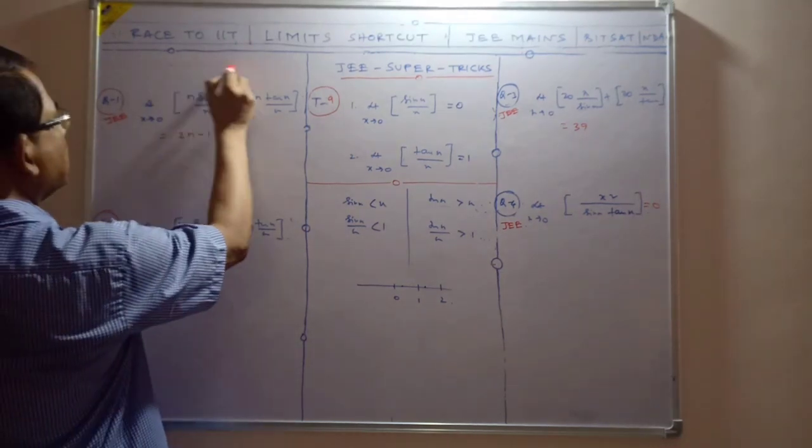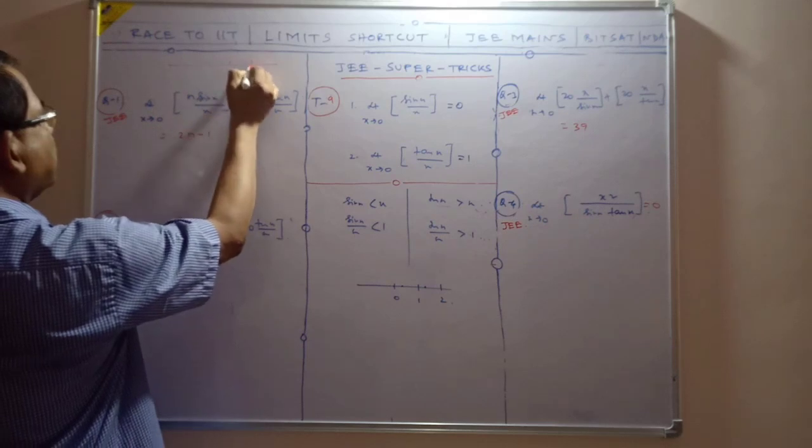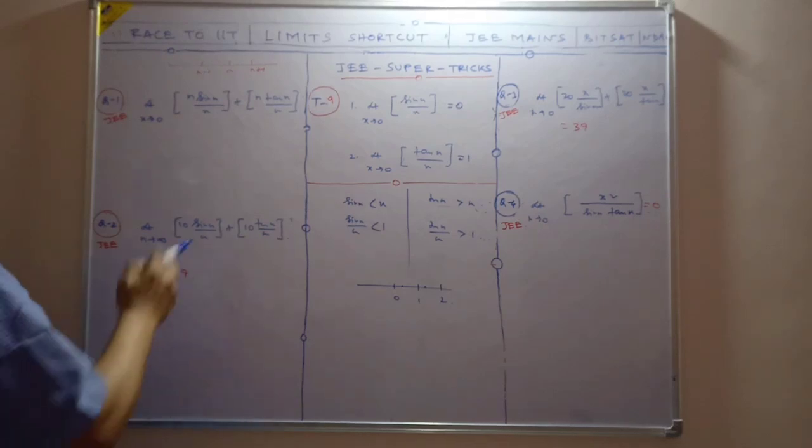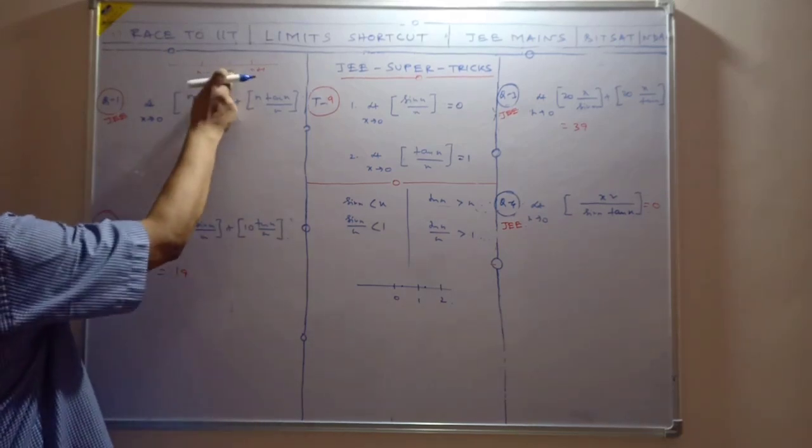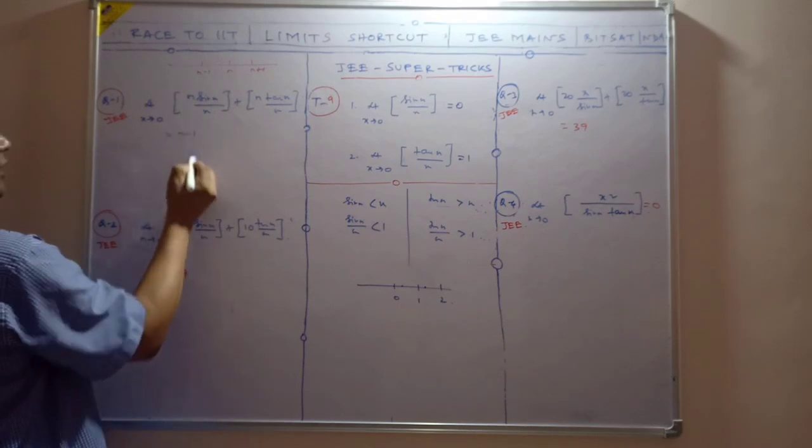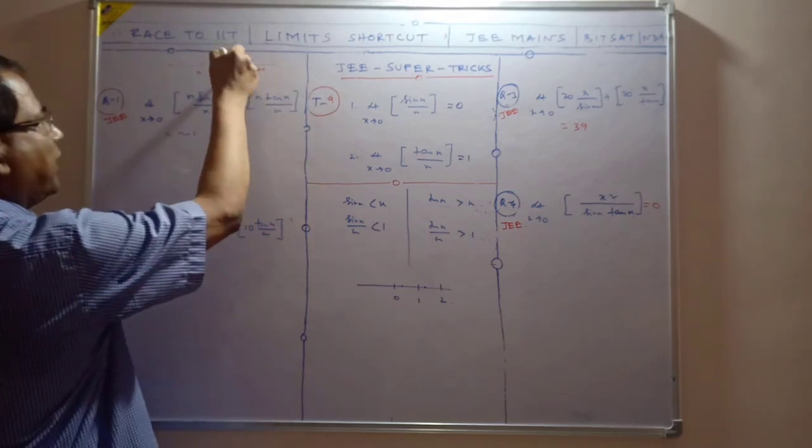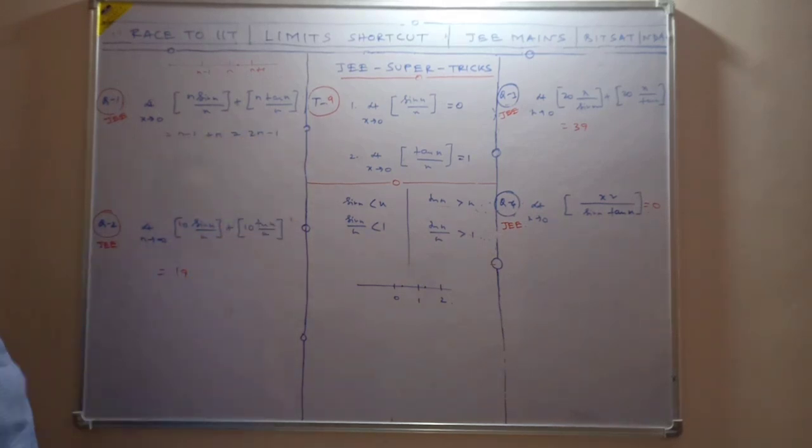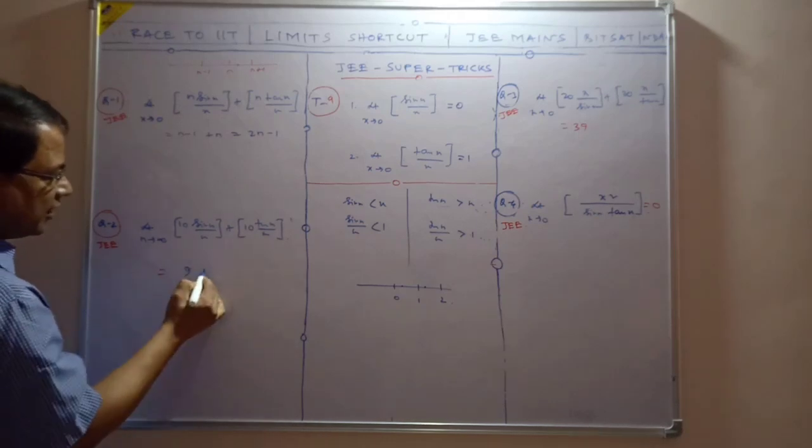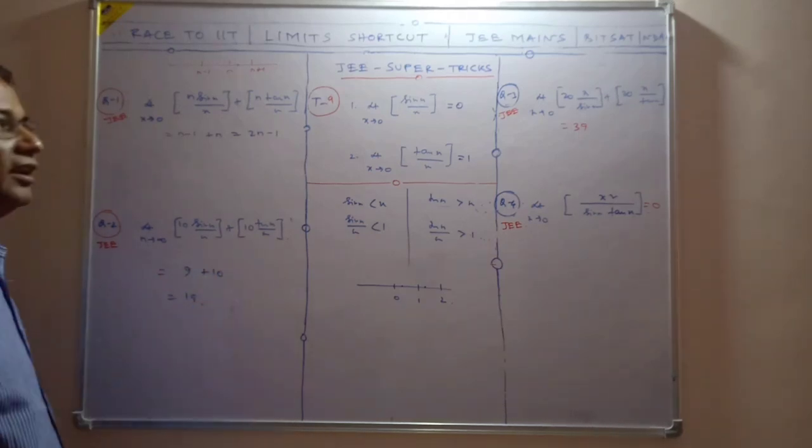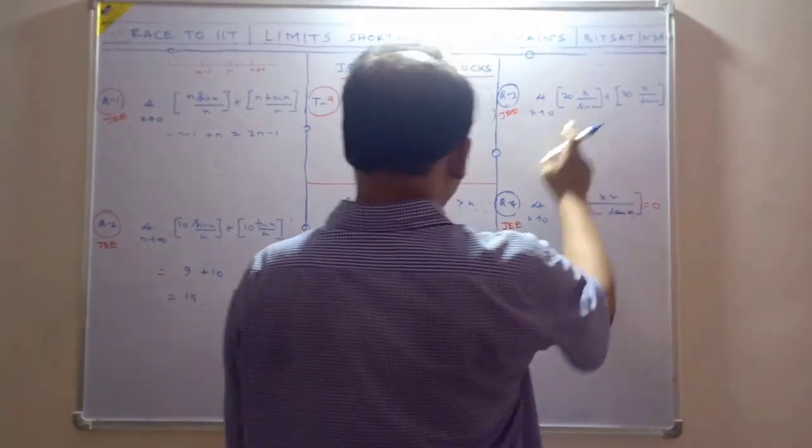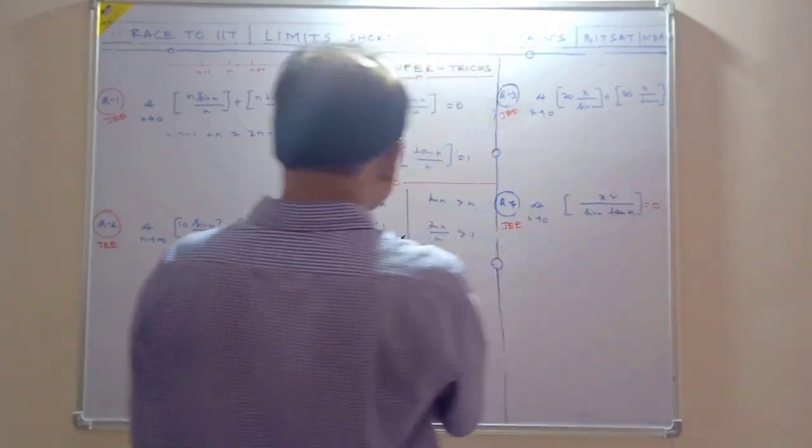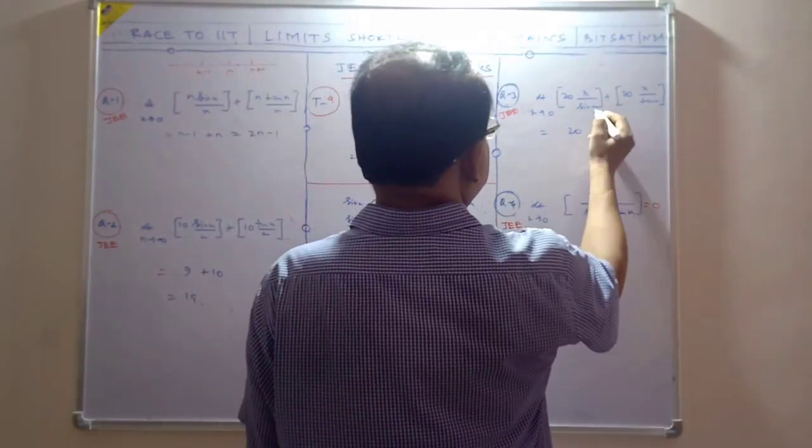Let me draw a number line. This is n, this is n+1, this is n-1. If a value is just slightly less than n, it's less than n, so the greatest integer gives n-1. So this is 20 minus 1, which means it gives 19. When it becomes greater, it gives 10, so this gives 20.